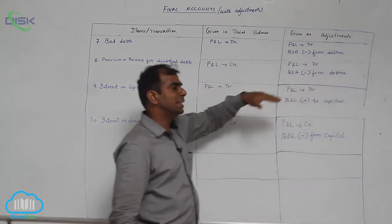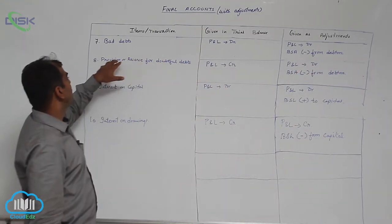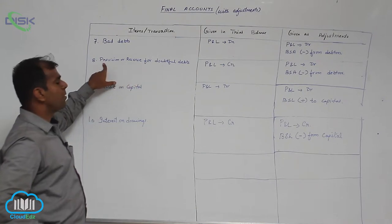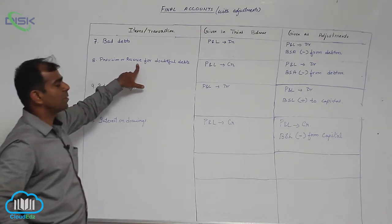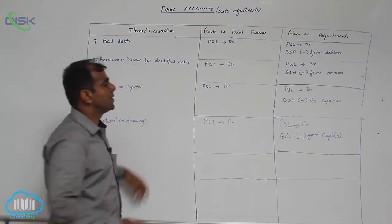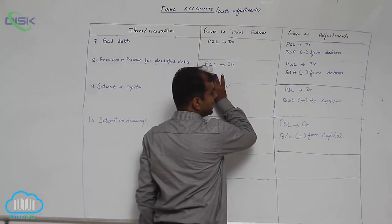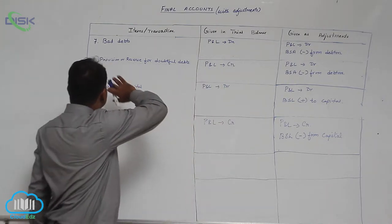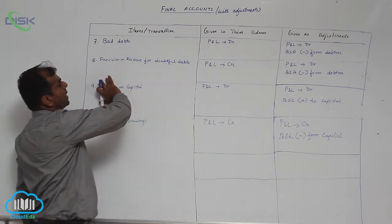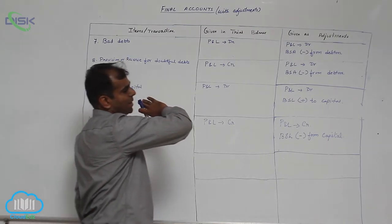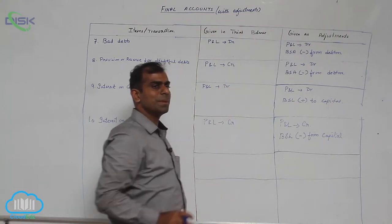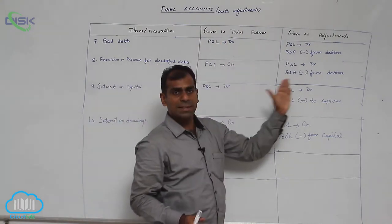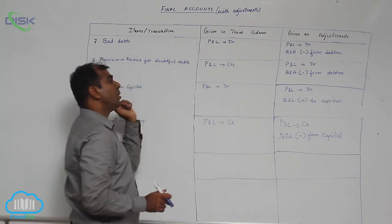Now, provision or reserve for doubtful debts. This is very important — you will see a slight difference, because bad debts, provision for bad debts, etc., all will be there in the same problem. You might find all these four things in one problem, but the key is how to treat each one.